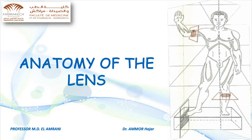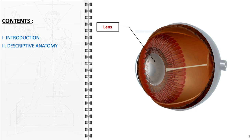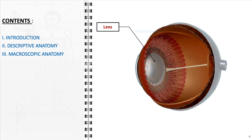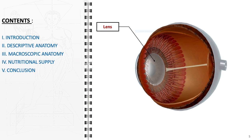In this video, we will discuss the anatomy of the lens. Beginning with an introduction, we will proceed to describe the anatomical characteristics of the lens, focusing on its macroscopic anatomy. Following this, we will explore its nutritional supply. Lastly, we will conclude with the key takeaways from our discussion.